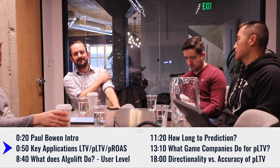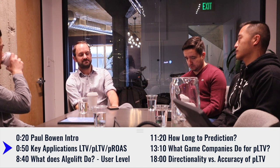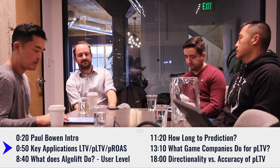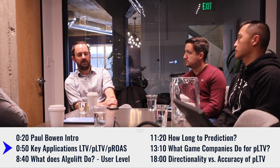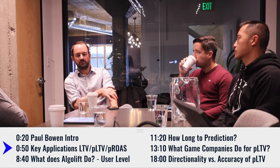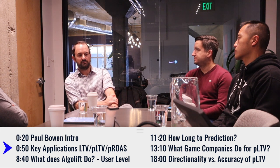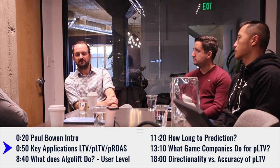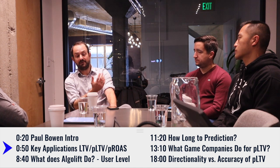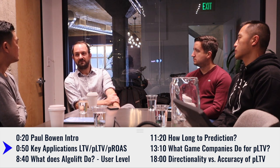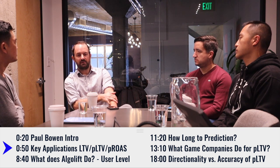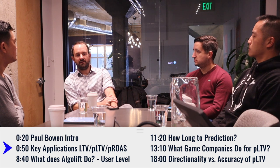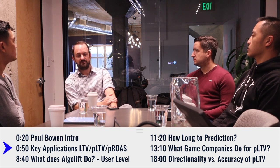The P in PLTV means predicted. So you're essentially trying to understand what the future looks like based on past behavior. Almost all of our clients and people that we talk to are looking at D7 ROAS as the core metric against which they optimize their marketing campaigns. We have some clients who use D1 ROAS as a metric to understand the future lifetime value of their users.